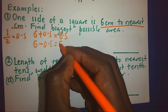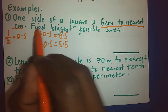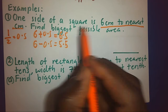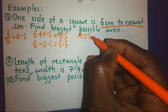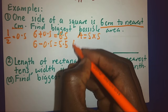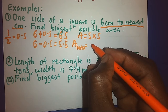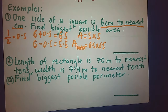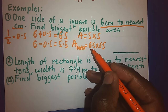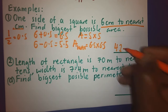Remember, they are asking us to find the biggest possible area. This is a square, and the formula for the area of a square is side times side. But if I want maximum area, I will multiply upper bound times upper bound to get the biggest possible answer. So 6.5 times 6.5 gives me 42.25.